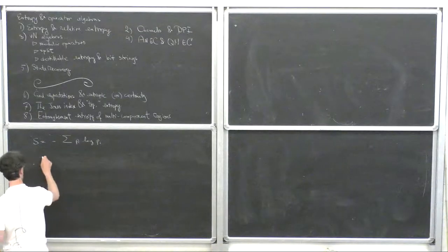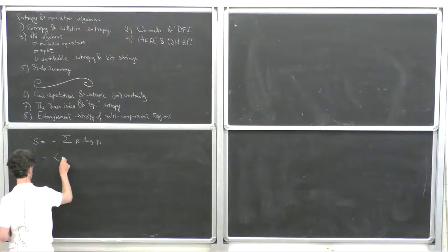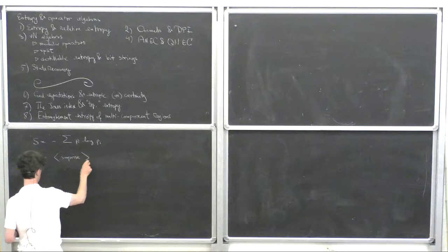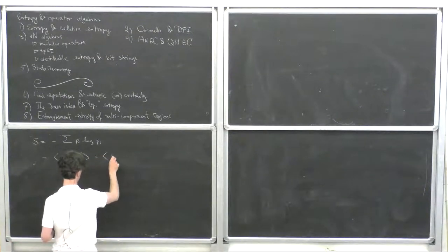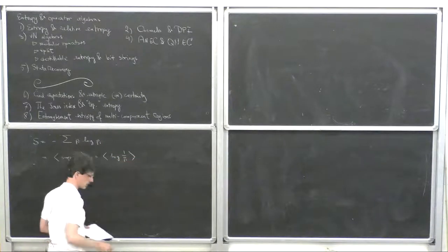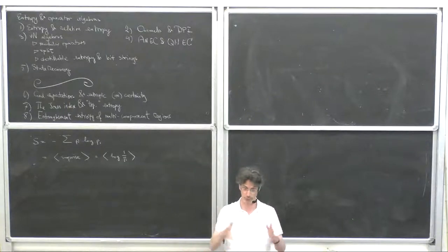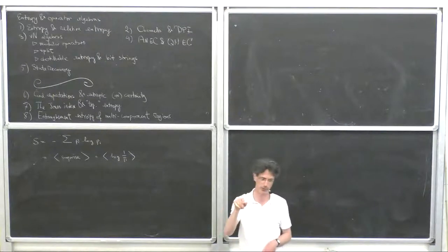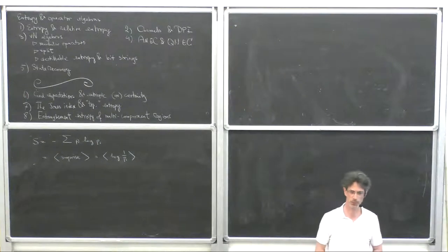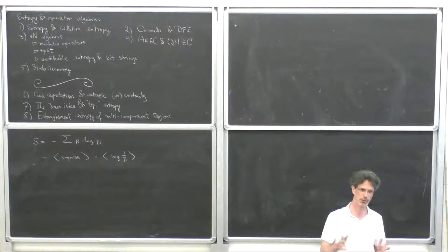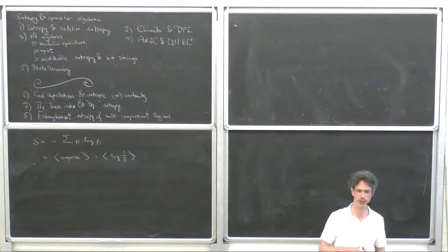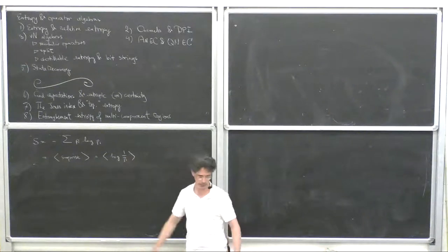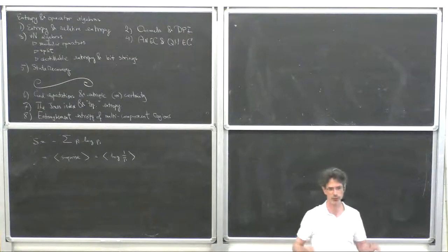The way you can interpret entropy is as the average surprise. If you have a probability distribution with a very rare event like winning the lottery, then if you actually win the lottery, you should be surprised. The surprise should be something like one over the probability, but the surprise should also be additive — because if you have independent events and you win the lottery twice, you're not surprised squared but surprised plus surprised. The logarithm makes it additive, and then you average over all possible events.